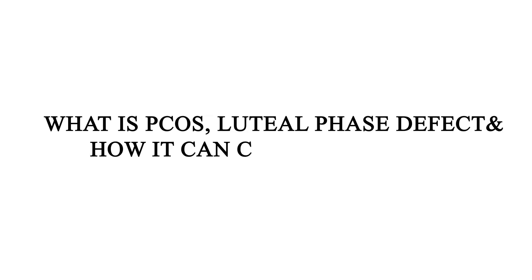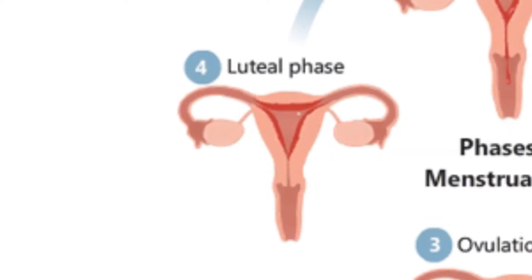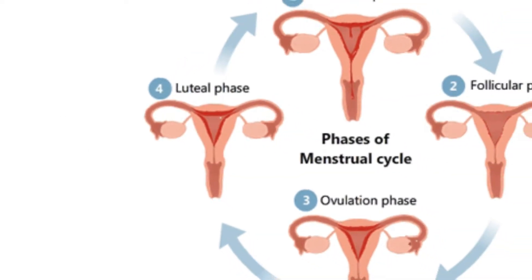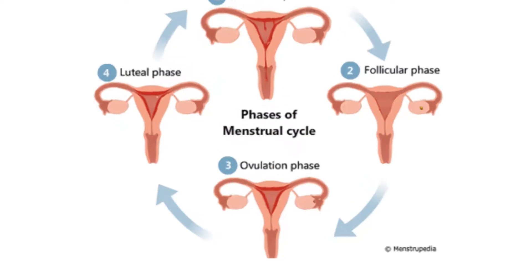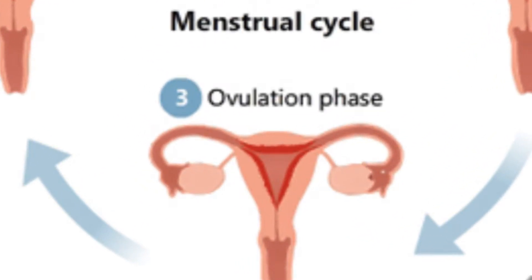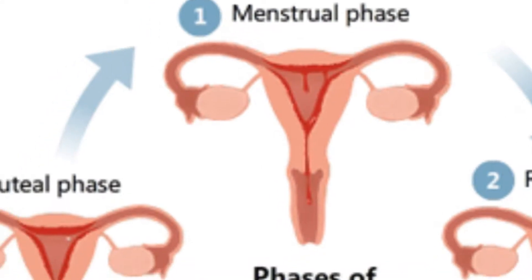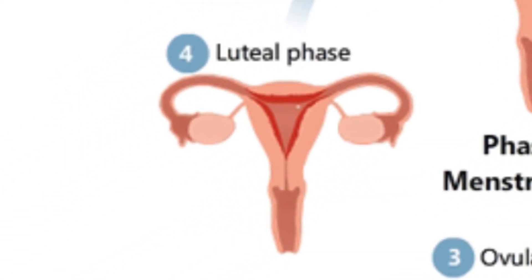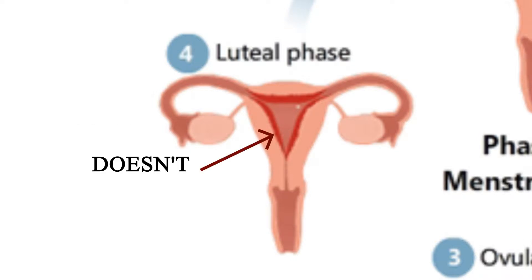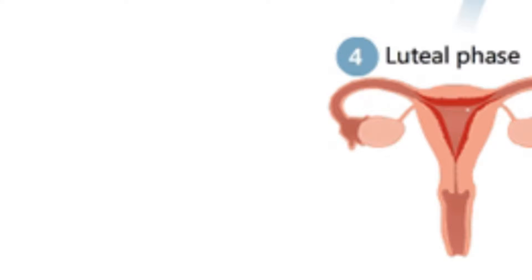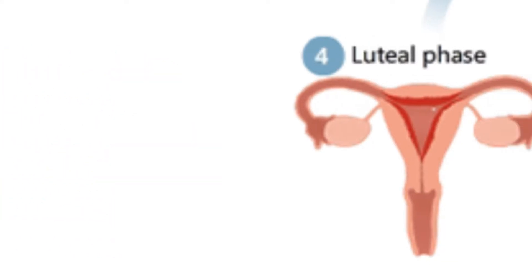What is PCOS luteal phase defect and how can it cause infertility? The luteal phase is one stage of your menstrual cycle. It occurs after ovulation, when your ovaries release an egg and before your period starts. During this time, the lining of your uterus normally gets thicker to prepare for a possible pregnancy. If you have a luteal phase defect, that lining doesn't grow properly each month.